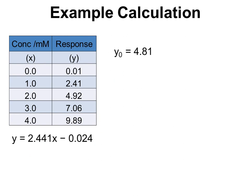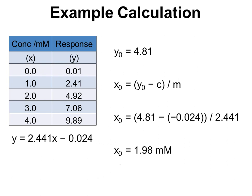Let's look at the example calculation for this. We've recorded our calibration data, our xy data. The line of best fit for this is given here: y equals 2.441x minus 0.024. We recorded our y0 as 4.81. And so we can use those numbers. x0 equals y0 minus c divided by m. We've plugged those numbers into the equation. And that gives a value of x0, the concentration for our unknown sample, as 1.98 millimolar.